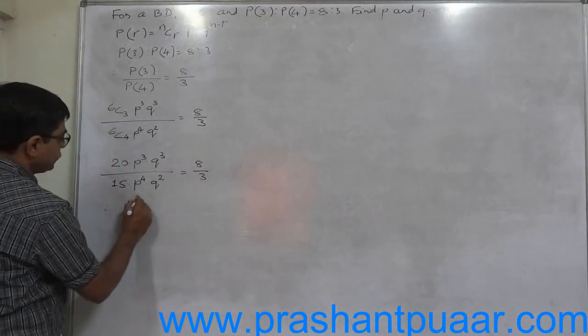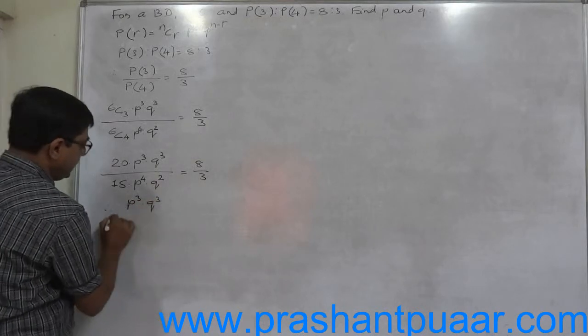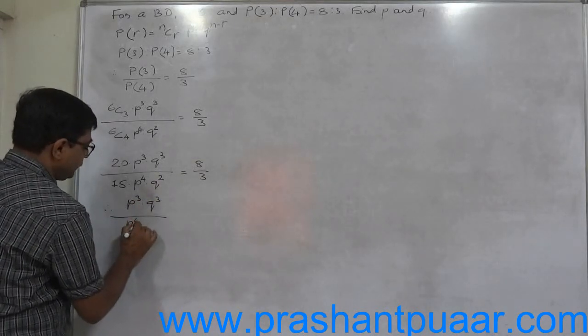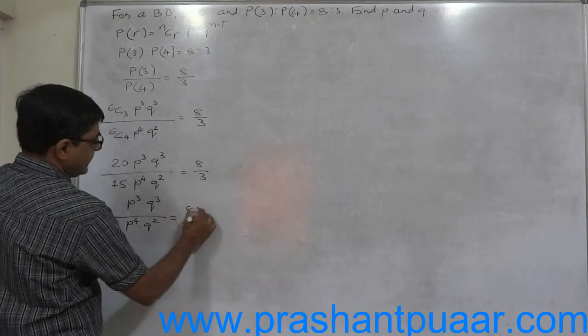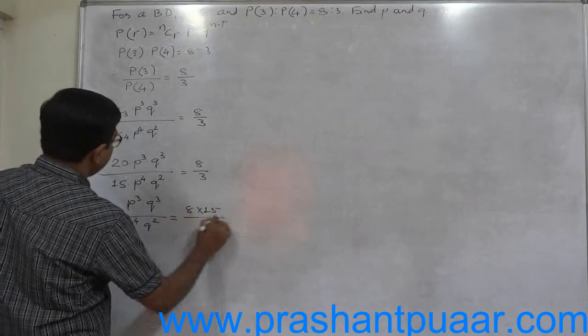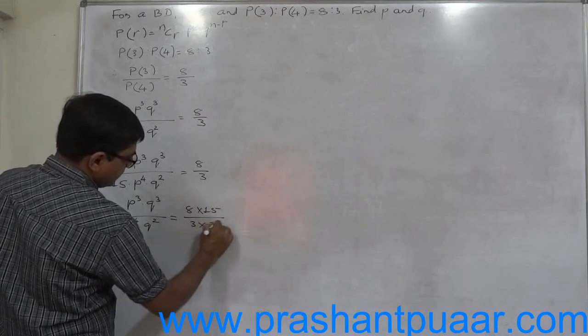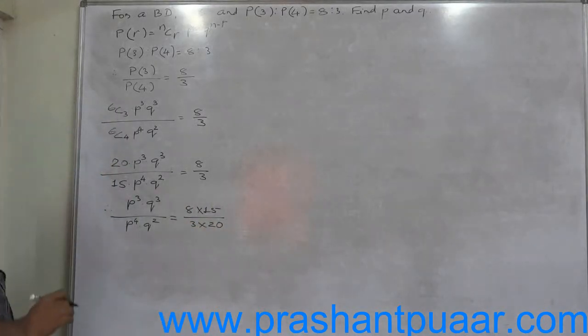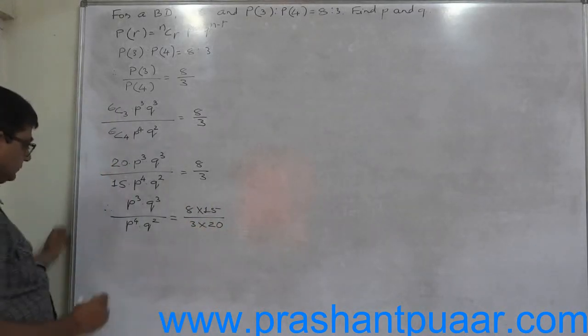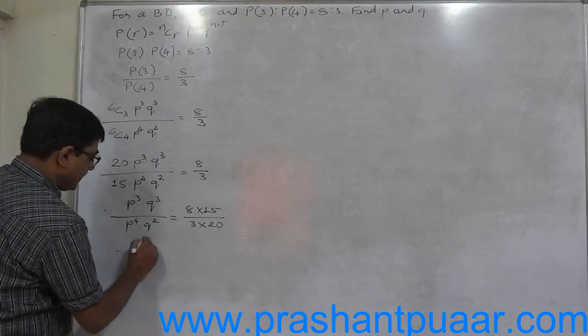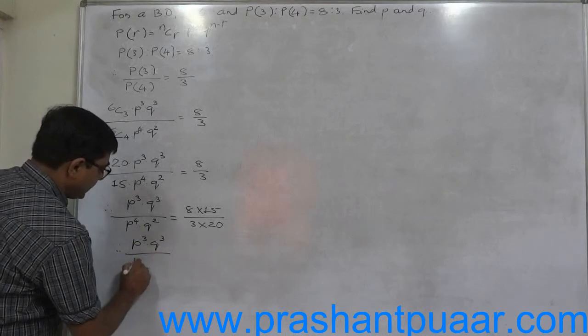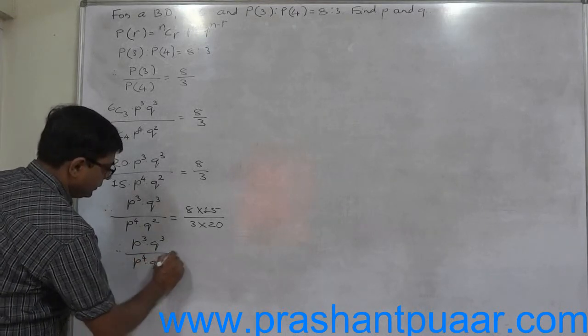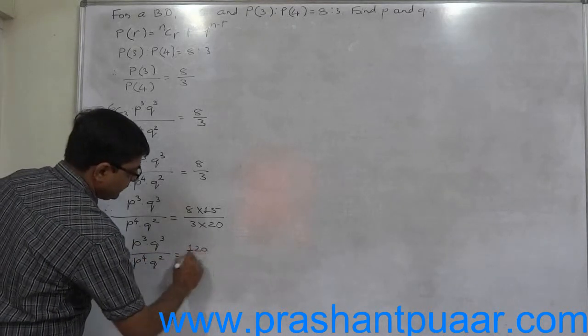Therefore P raise to 3 into Q raise to 3, divide by P raise to 4 into Q raise to 2, equals to 120 divided by 60.